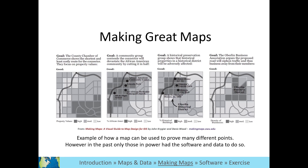When looking at these maps, keep in mind a few things. Only relevant features for a particular group were selected to be in each map. Each map was made by a different creator and trying to convey a different message. And each map is good for a different group. None are right or wrong — they're just conveying different messages.